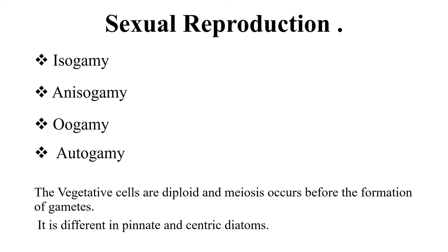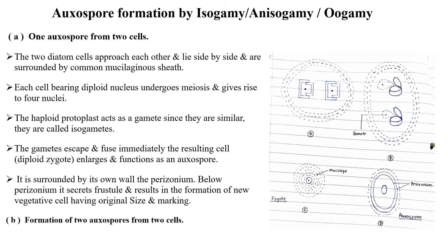In sexual reproduction, spore formation takes place by so many types: isogamy, anisogamy, and oogamy. The vegetative cells are diploid and meiosis occurs before the formation of gametes. This is different in pennate and centric diatoms. In isogamy, male and female gametes are of the same size. In anisogamy, one gamete is bigger than the other. In oogamy, the female gamete remains inside while it gets fertilized by male gametes which are amoeboid or motile.